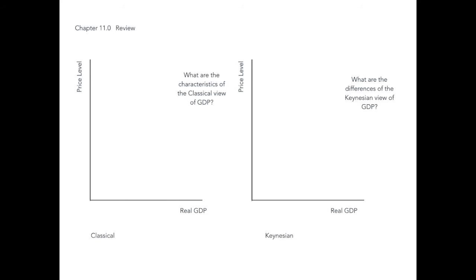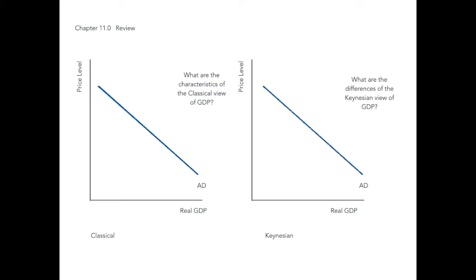Some economists call the multiplier effect the Keynesian multiplier. John Maynard Keynes did most of his work during the Great Depression. The mainstay classical economic theory at the time did not really reflect the economic conditions of the 1930s.